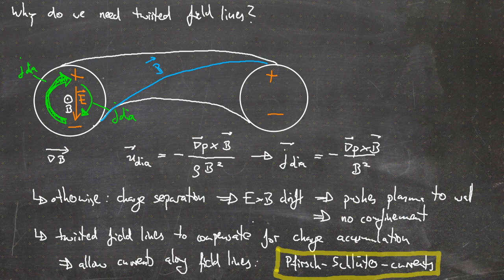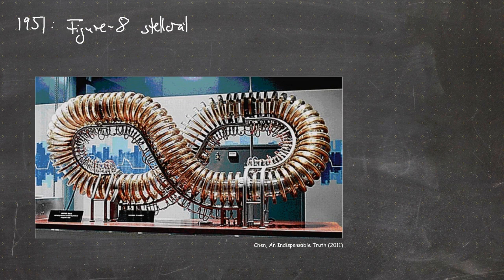One solution suggested in 1951 by Spitzer was the so-called figure-eight accelerator, named for obvious reasons as you can see in the picture. This was suggested by Lyman Spitzer in Princeton.